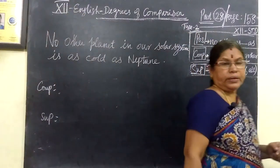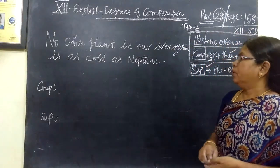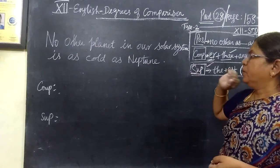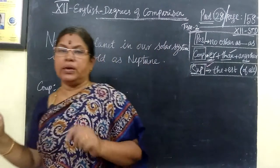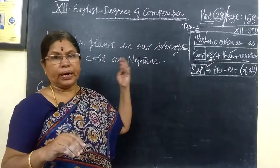Now, 12th standard English, page number 158, degrees of comparison. Last class we have seen some sentences like this. We have seen 'no other planet' - everything given in the book. Book exercise task 1, 2, 3, and then the type to collect.